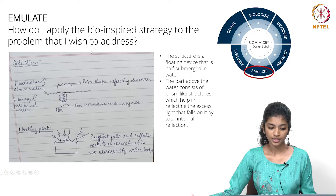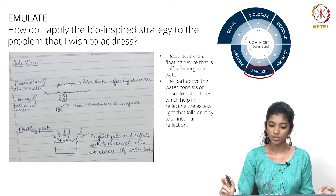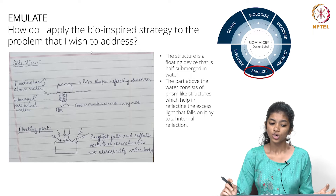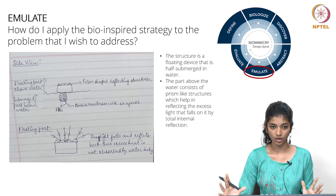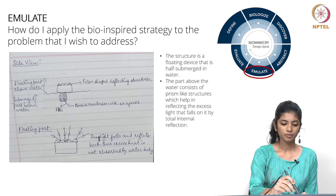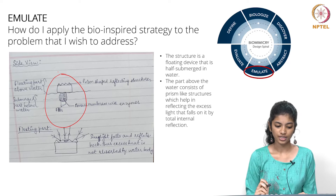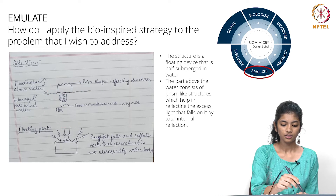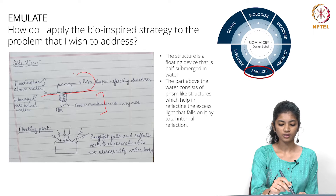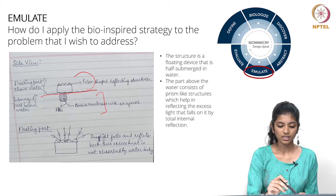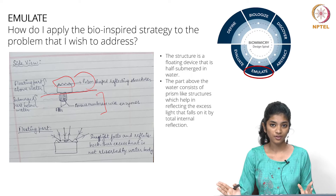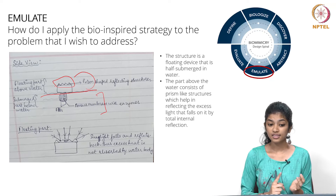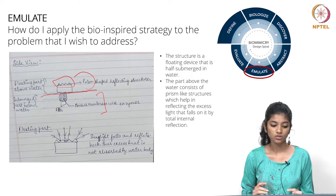The next step is emulate — how do I apply this bio-inspired design strategy to the problem I wish to address? This is one of the main steps where you come up with the design of your product or idea. This is the side view of my device: this is the water level, this is the part submerged below the water, and this is the part floating on top. The floating part consists of prism-like reflecting structures which reflect back excess heat and light, solving the problem of ocean warming.